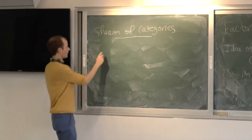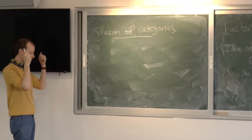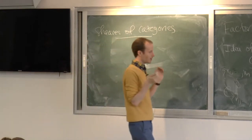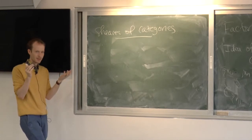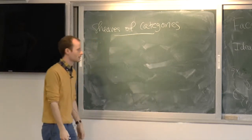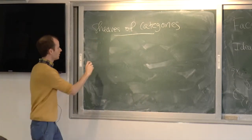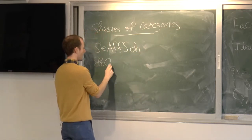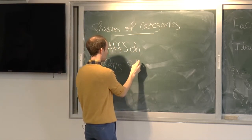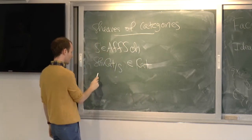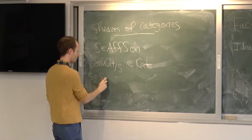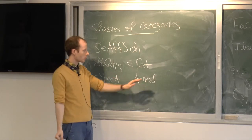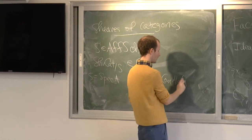So, sheaves of categories. What we'll achieve is: every time someone gives you a pre-stack, we'll have some notion of sheaf of categories on that pre-stack. How can I possibly do this? I don't have so many tools at my disposal. The first thing I need to do is do it for affine schemes, because pre-stacks are formally defined out of affine schemes—they're just the category of contravariant functors to groupoids.